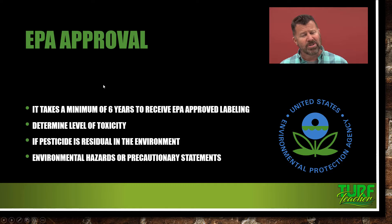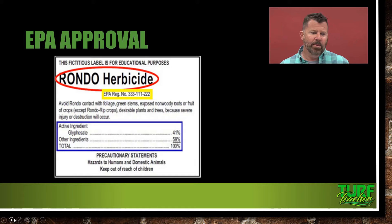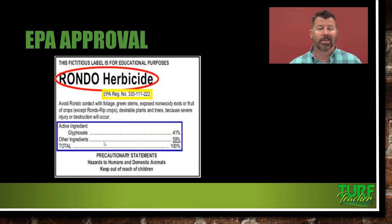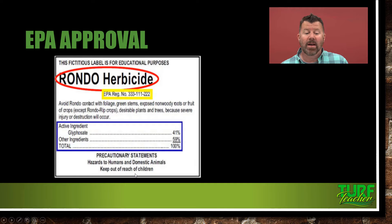It's a lot of investigative work that goes on with the EPA getting a pesticide approved for sale. This is a fictitious label used only for educational purposes — RONDO herbicide. It has been approved by the EPA with an EPA registration number of 333-111-222. The active ingredient is glyphosate, so this is a generic form of Roundup. You can see the precautionary statements: hazardous to humans and domestic animals, and keep out of the reach of children.